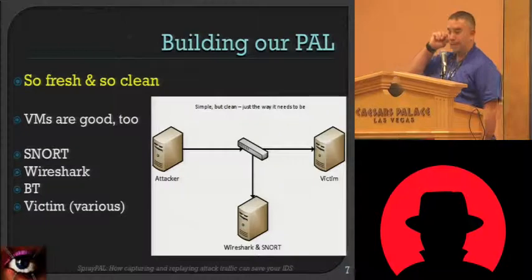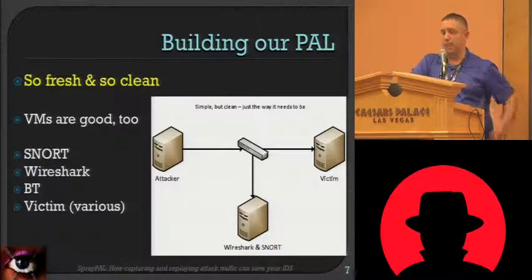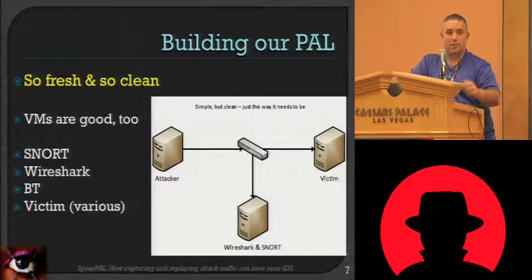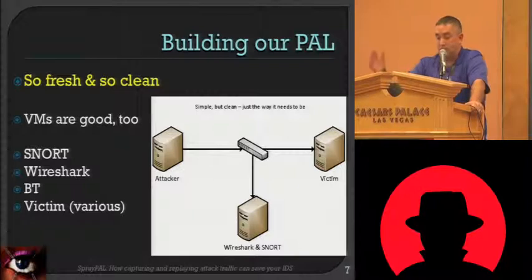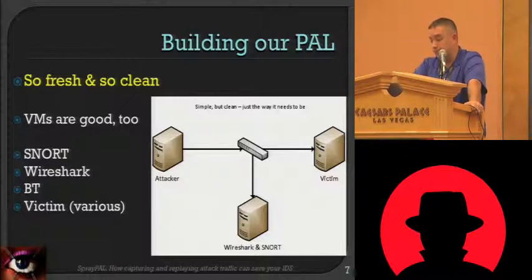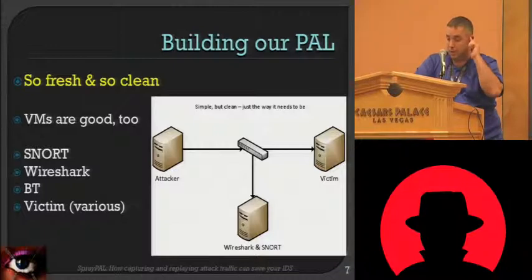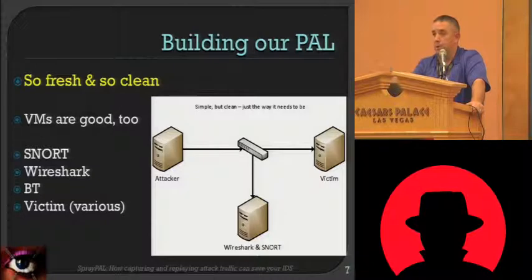When we build the PCAP attack library there are a number of ways to go about it. We found the easiest way is a very simple network. One issue with the first replay tool we looked at was too much extra junk in the capture, so we try to streamline the attack to make it as small and as clean as possible. You take an attacker box — 99% of the time that's Backtrack with whatever tool you need — then set up your victim in the appropriate way with the necessary software packages to make it vulnerable. We also dropped a Snort box so we could test our rules. It also works well if you just run one machine with multiple VMs — very quiet, and you don't get a lot of extra traffic.